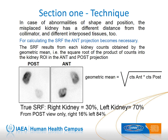For a precise calculation of split renal function in case of an ectopic kidney, you need the anterior view. The value to use is the geometric mean of the counts pertaining to each kidney in the anterior and posterior view — multiply these counts and then extract the square root. The slide shows an example calculation in a case of lumbar ectopy of the right kidney, with SRF calculated by geometric mean compared to the one obtained from the posterior view only. When you visualize an ectopy or a single renal silhouette, calculating an SRF can become less precise or meaningless.